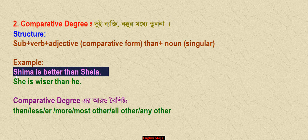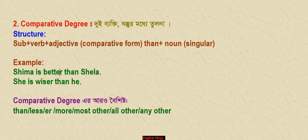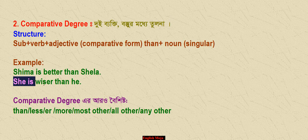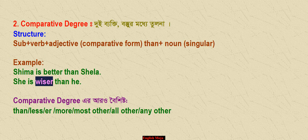If you have a positive, comparative, and superlative sentence — the comparative degree works in two different ways. The adjective takes its comparative form and is followed by 'than.' For example: 'She is wiser than he.' She is wiser than he.